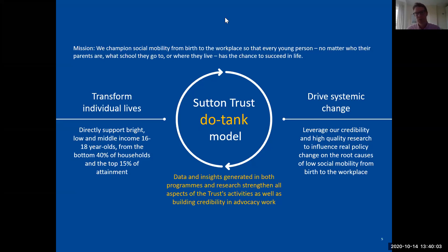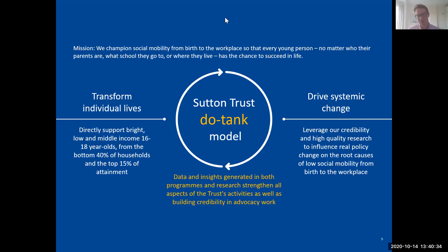The point of that research work is to keep social mobility at the top of the agenda and to inform change at a national policy level or in terms of what schools, universities, and businesses are doing. The magic happens when those two things come together. Our programme work gives our research great credibility because it has a real-world edge based in our experience of working with young people. And our research drives innovation in our programmes — the data from the 40,000 or so young people we've worked with helps refine what those programmes do and the obstacles they seek to challenge.